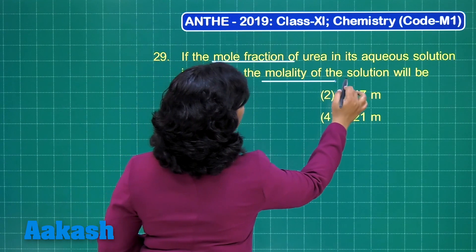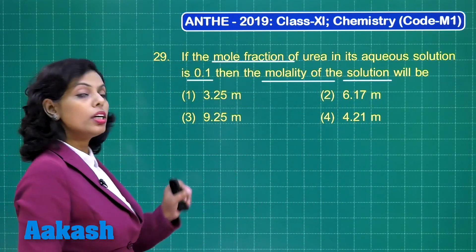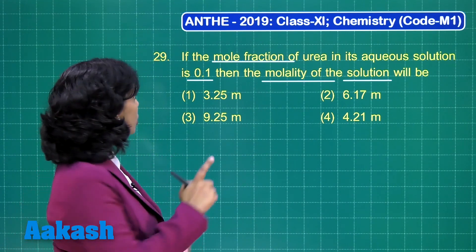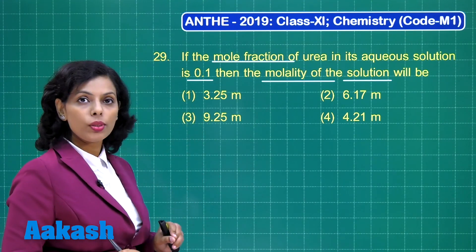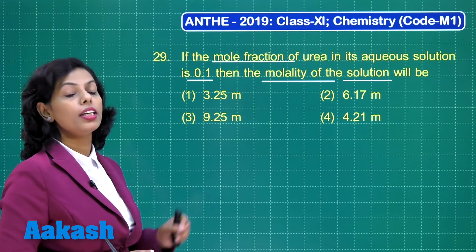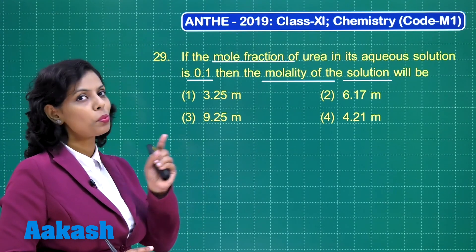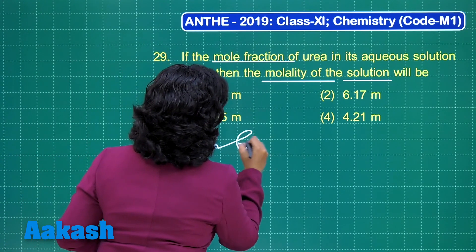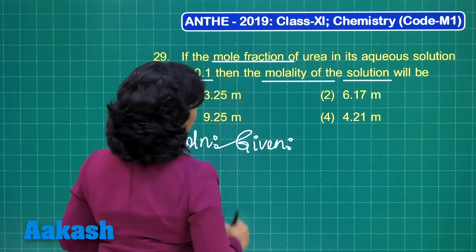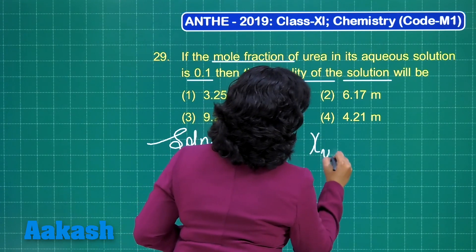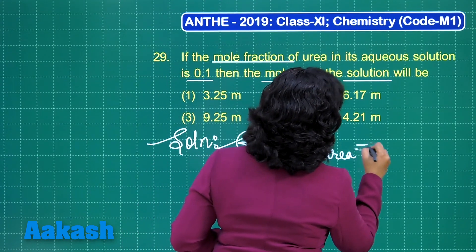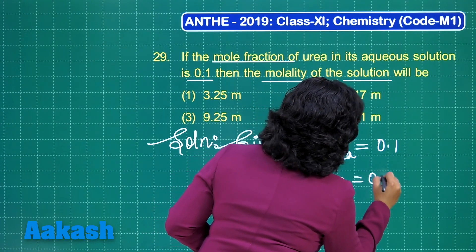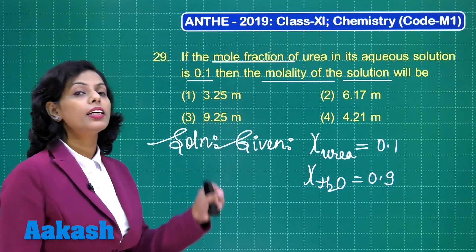You need to find out the molality of the solution. You should know that mole fraction represents the fraction of moles present in a particular solution. The mole fraction of urea is 0.1, so the mole fraction of water in that solution would be 1 minus 0.1, that is 0.9. Chi (χ) represents mole fraction; χ for urea is 0.1 and χ for water is 0.9.